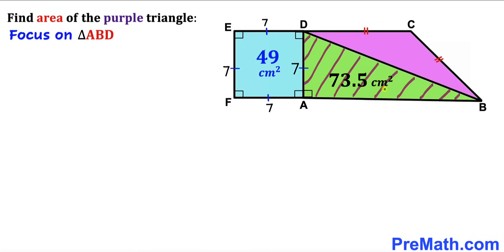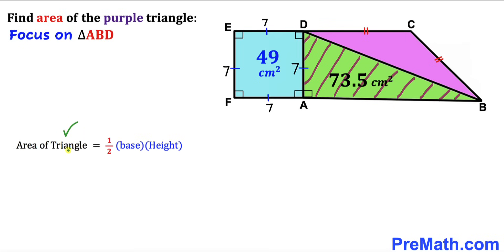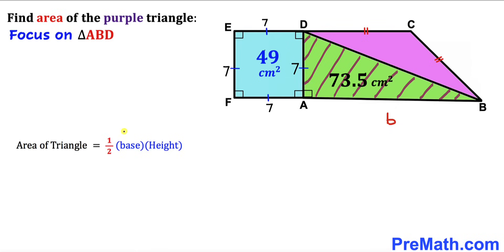Next, let's focus on right triangle ABD whose area is given as 73.5 centimeter square and whose side length AD is 7 centimeter. We are going to calculate side length AB. Recalling the area of a triangle formula: area equals one half times base times height. In our case, side length AB is the base, labeled as b, and the height is 7.